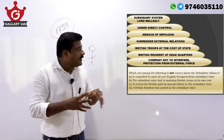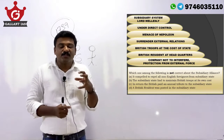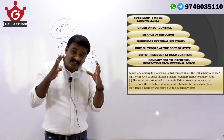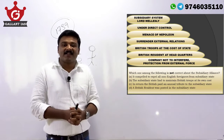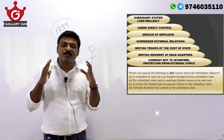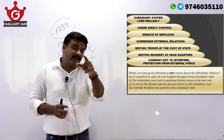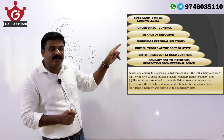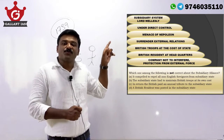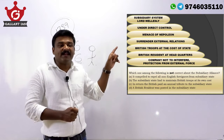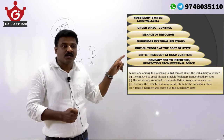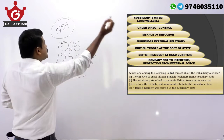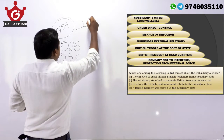Moving on to Module 2 — the Subsidiary Alliance System, discussed under the rise of princely states in India in the 18th and 19th century. Hyderabad was the first princely state to sign the Subsidiary Alliance with the British — Nizam Ali and Lord Wellesley. This Subsidiary Alliance System was introduced by Lord Wellesley.